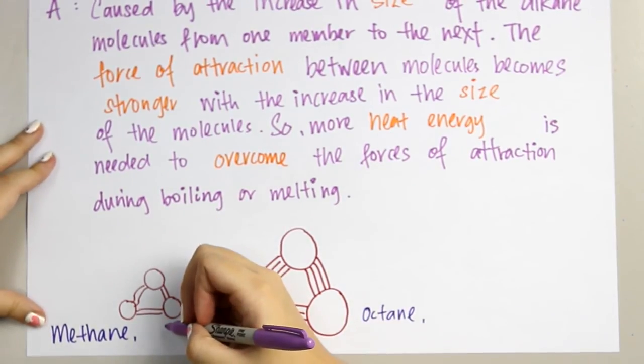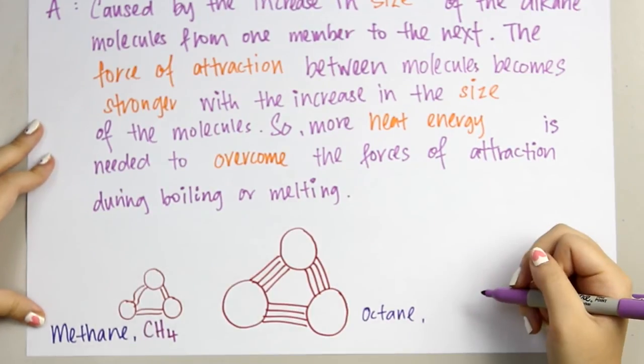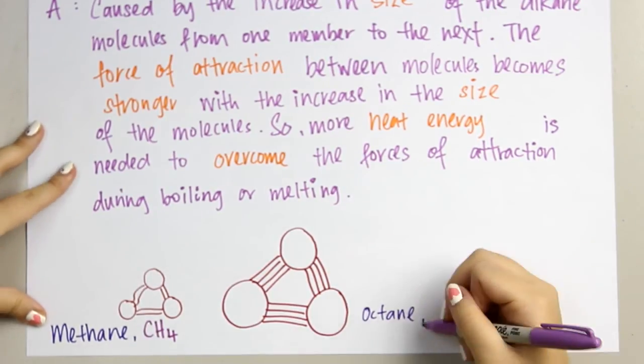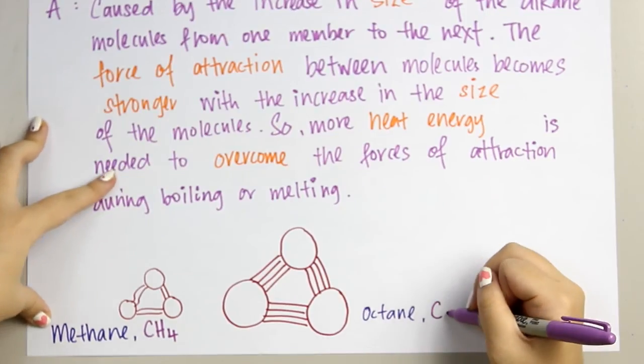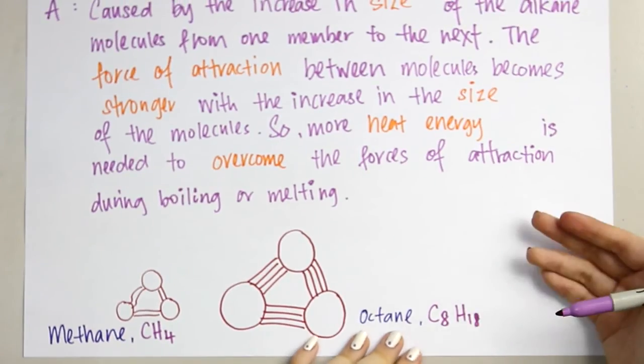First of all, the formula for methane is CH4, and the formula for octane is C8H18. How to get the formula?